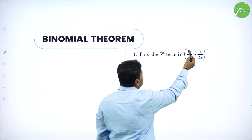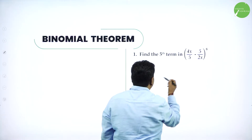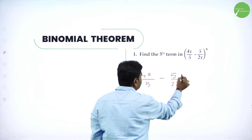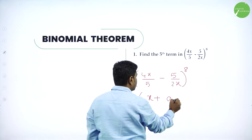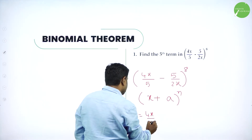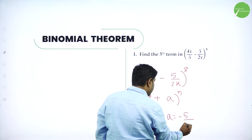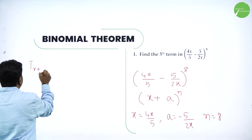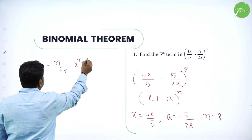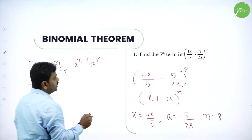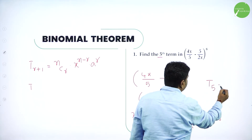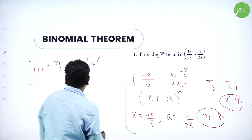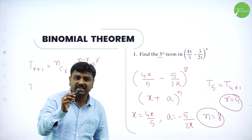Now find the 5th term in the expansion of 4x by 5 minus 5 by 2x whole power 8. It is in the form x plus a power n. By comparison: x is the first term 4x by 5, a is the second term minus 5 by 2x, and n is the overall power 8. They want the 5th term, so T5 equals T(4+1), meaning r is 4. We now have r, n, x, and a.